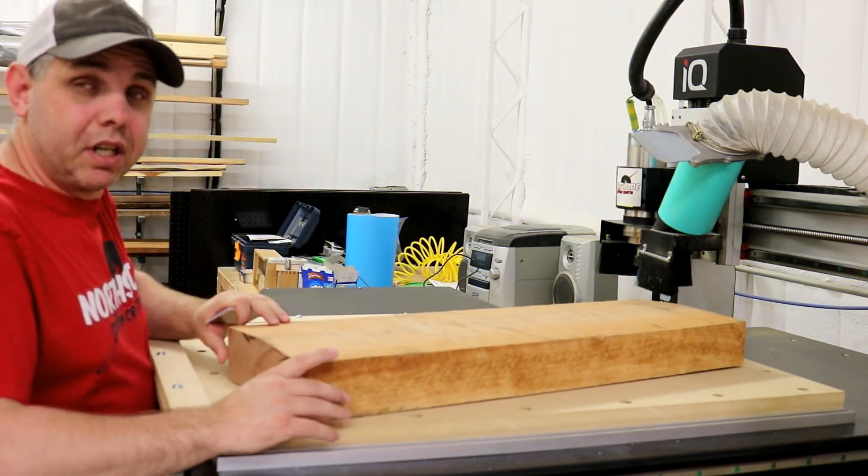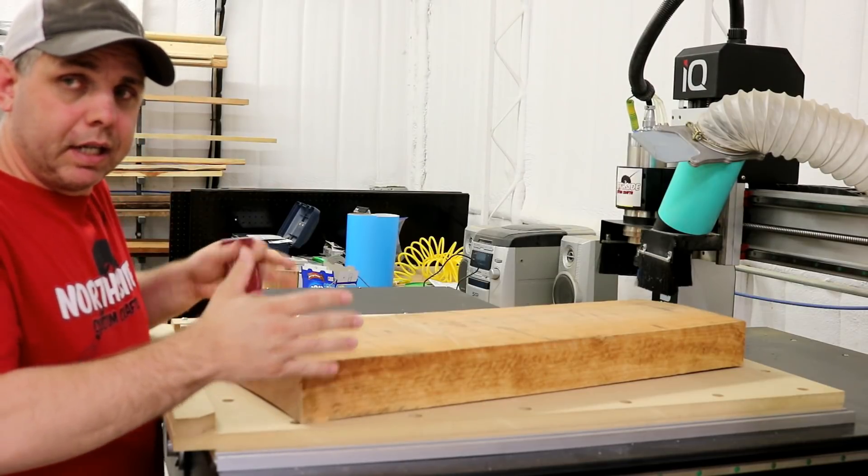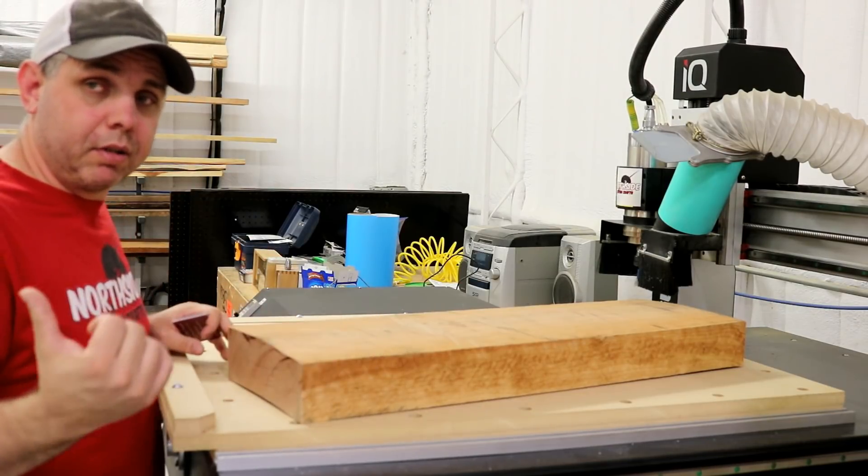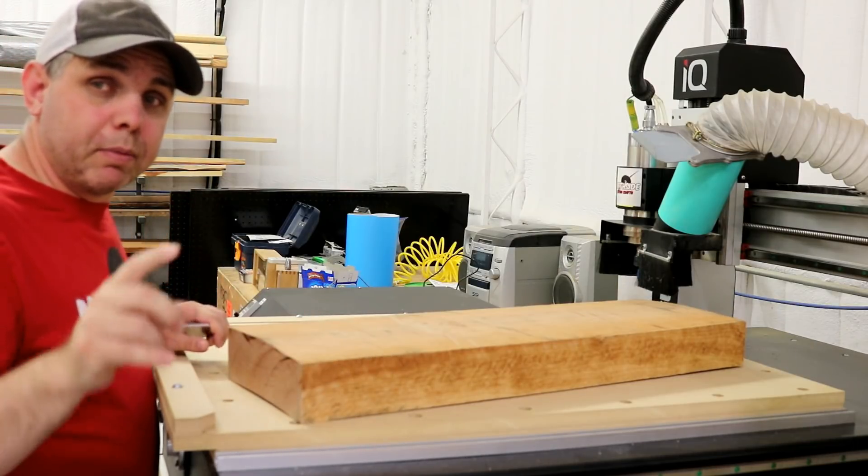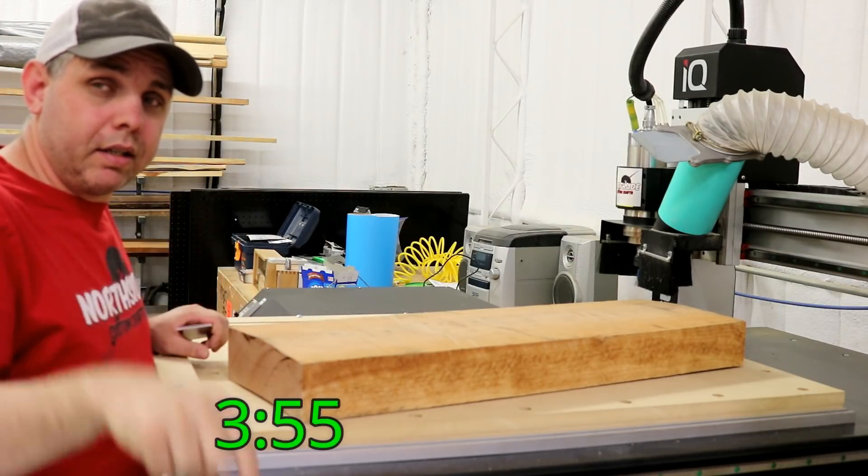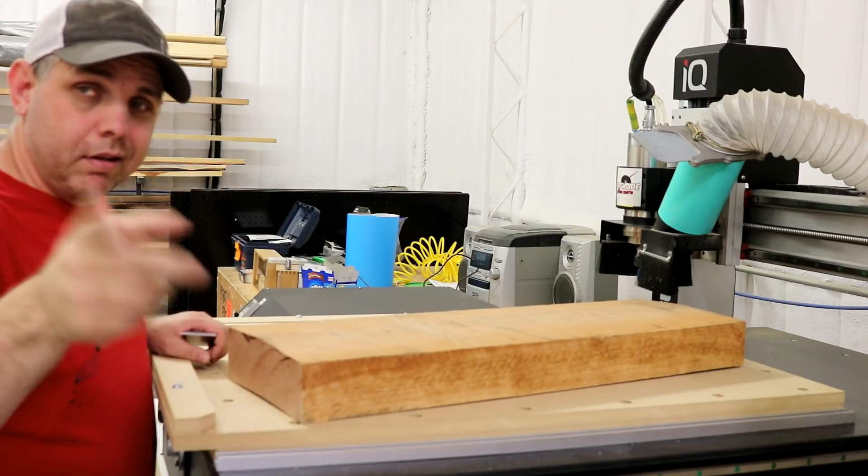I want to use this piece of cherry on an upcoming project. It has a couple of problems that we'll talk about in a minute, but for right now I need to take the measurements off of it and go to the computer and come up with a flattening pass for it. If you don't like the computer stuff, I'll put a timestamp right here and in the description so you can just skip past this and get right to the action.